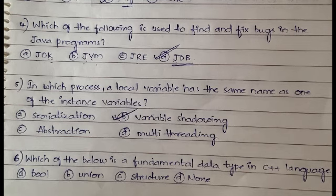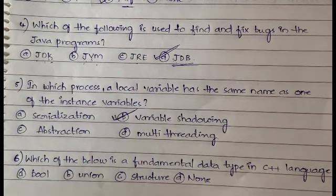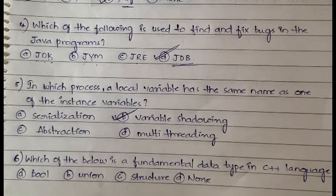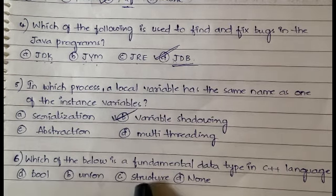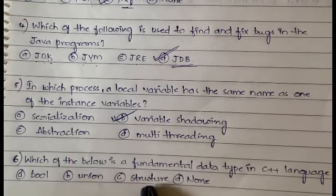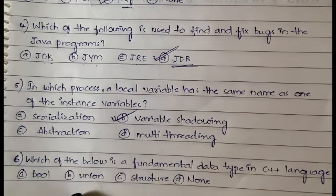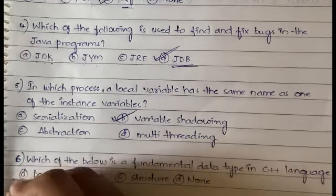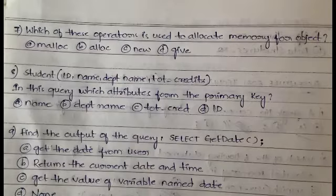Which of the below is a fundamental data type in C++? The options are boolean, union, structure, and none. Union and structure are also data types but they are user-defined data types, not fundamental. The answer is boolean, which is a fundamental or primitive data type.